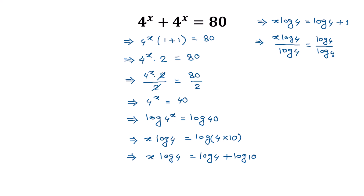Dividing both sides by log 4, we get x equals log 4 over log 4 plus 1 over log 4. The log 4 terms cancel on the first part, so x is equal to 1 plus 1 over log 4. This is the solution of our given equation.